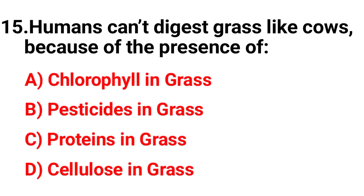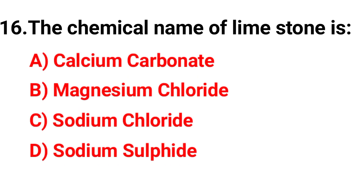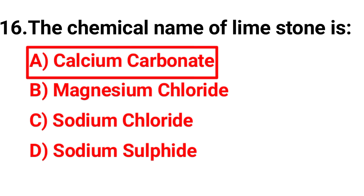Question fifteen: Humans cannot digest grass like cows because of the presence of — the correct option is option D, cellulose in grass. Question sixteen: The chemical name of limestone is — the right answer is option A, calcium carbonate.